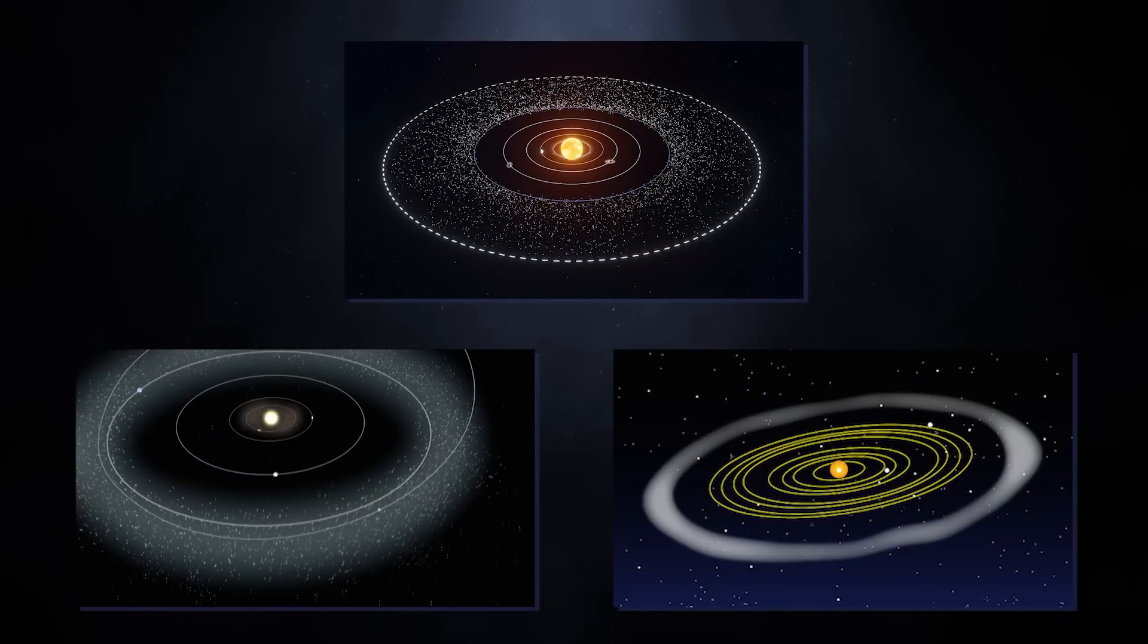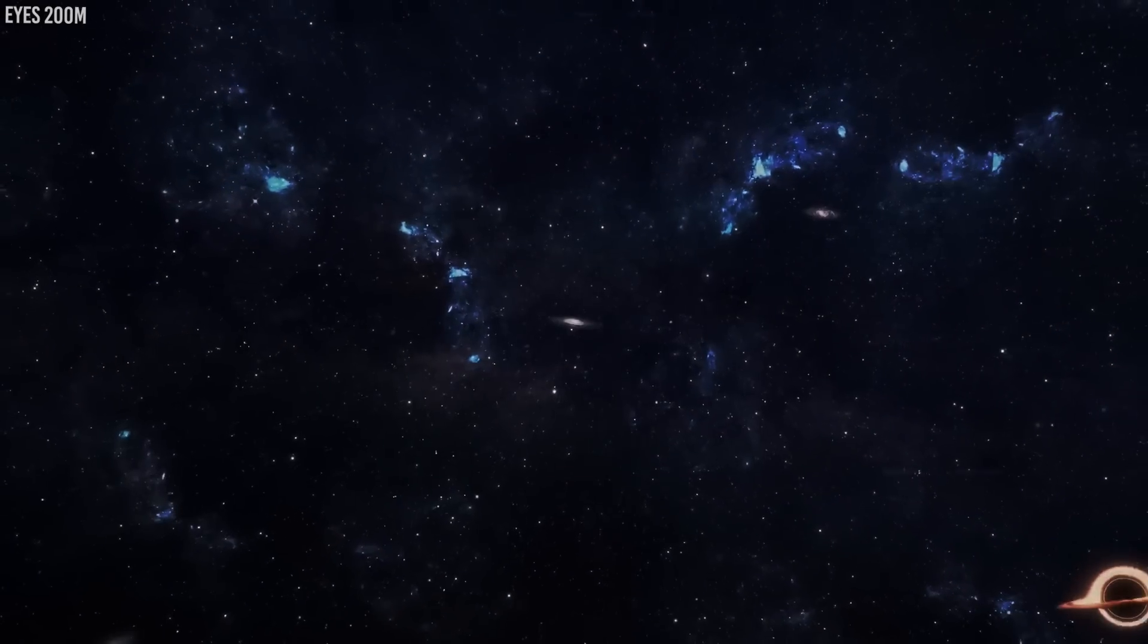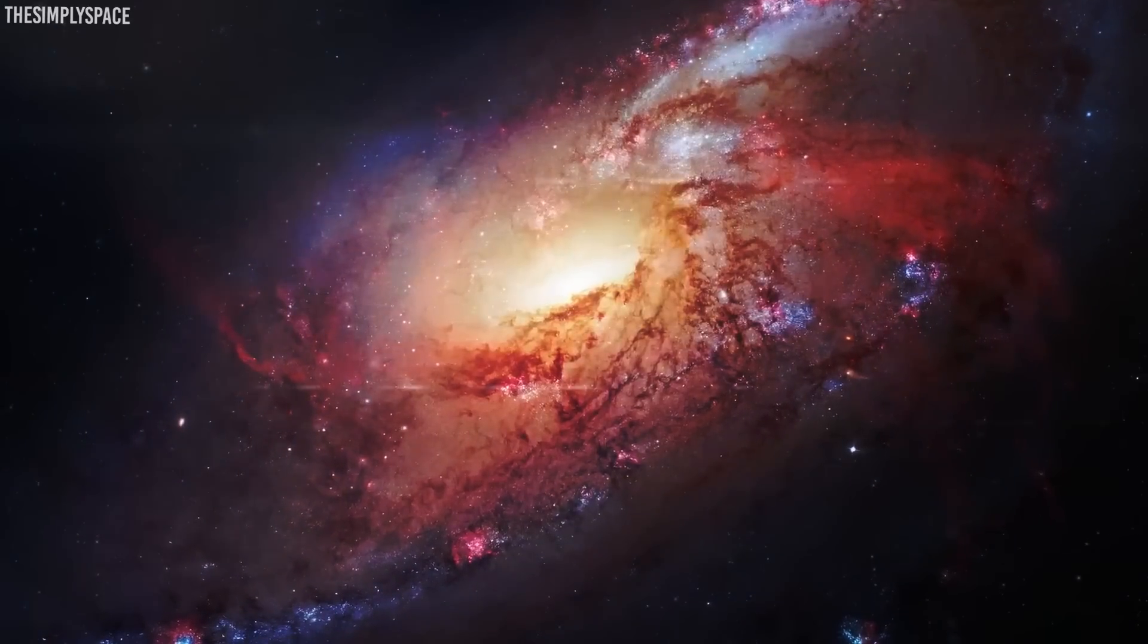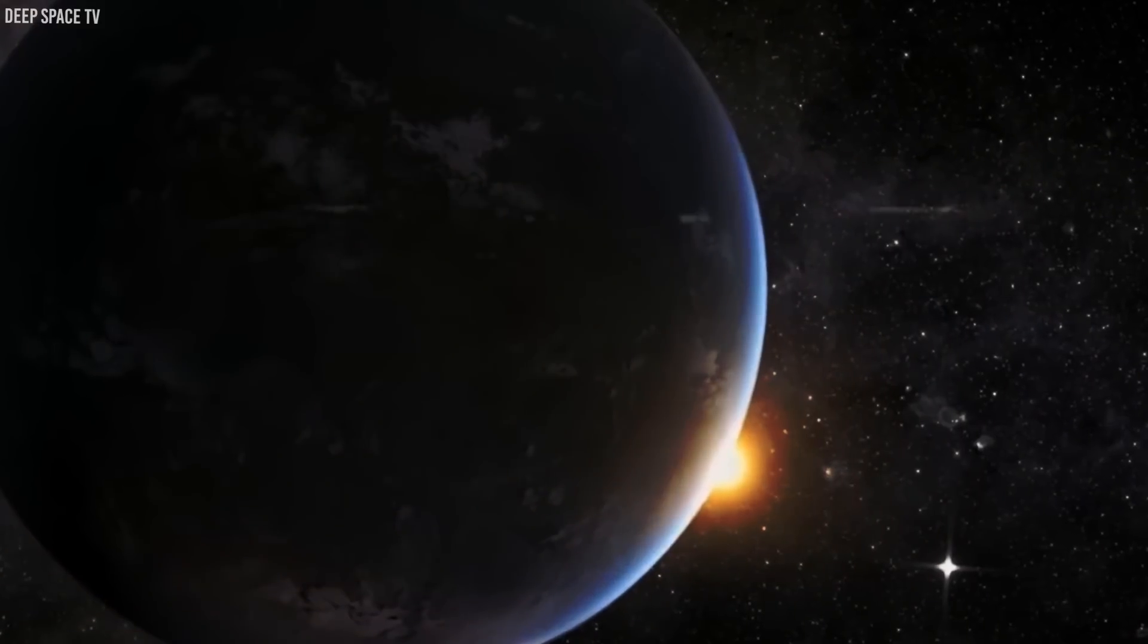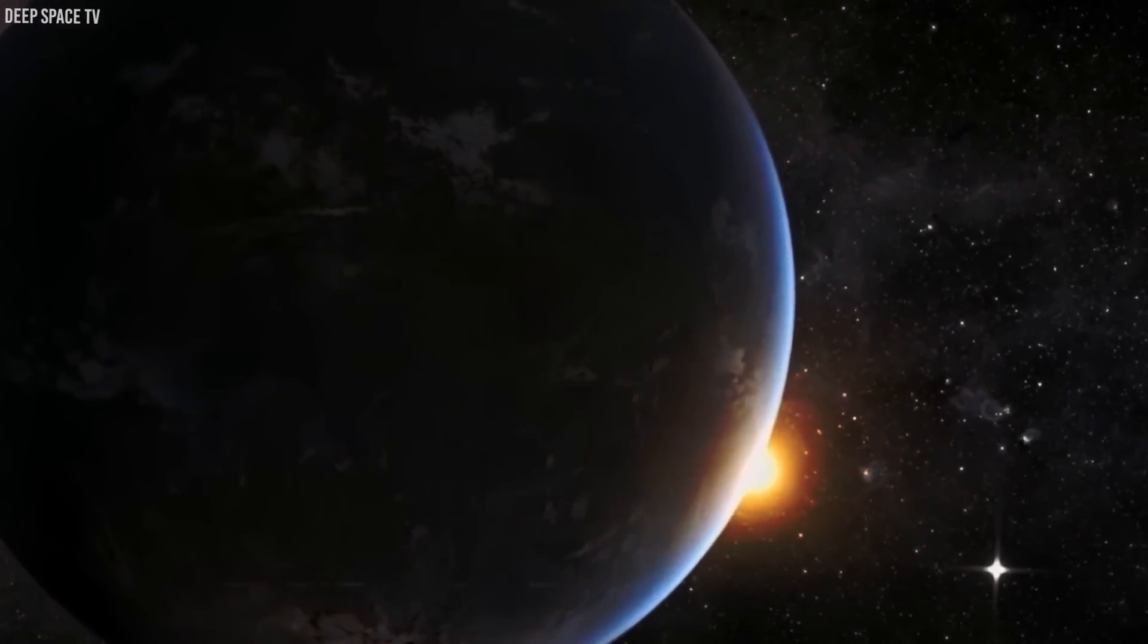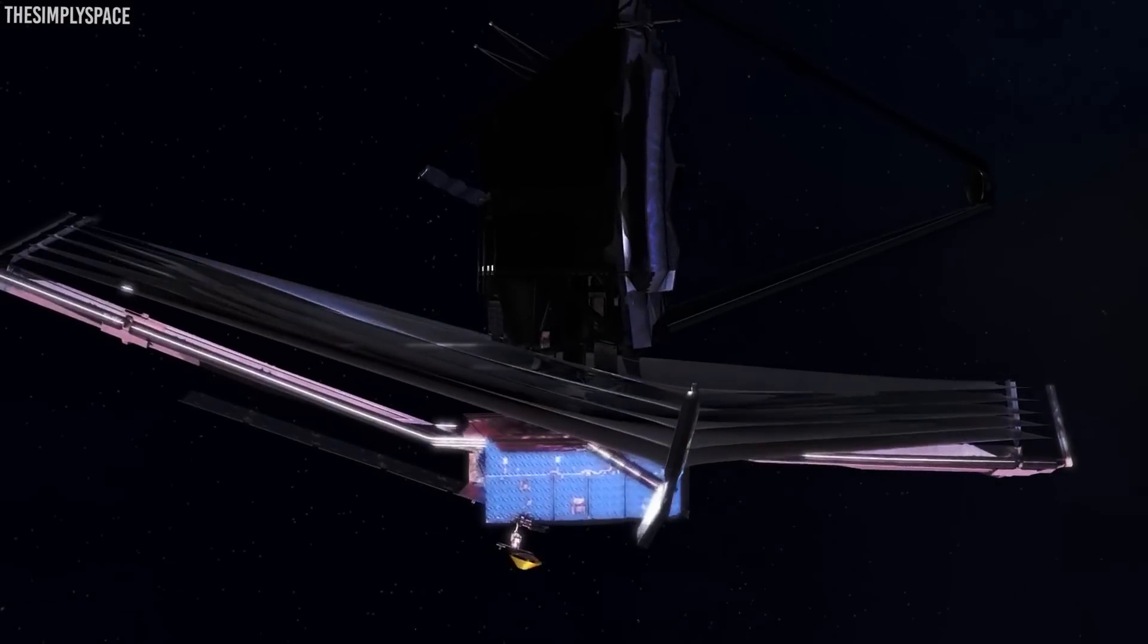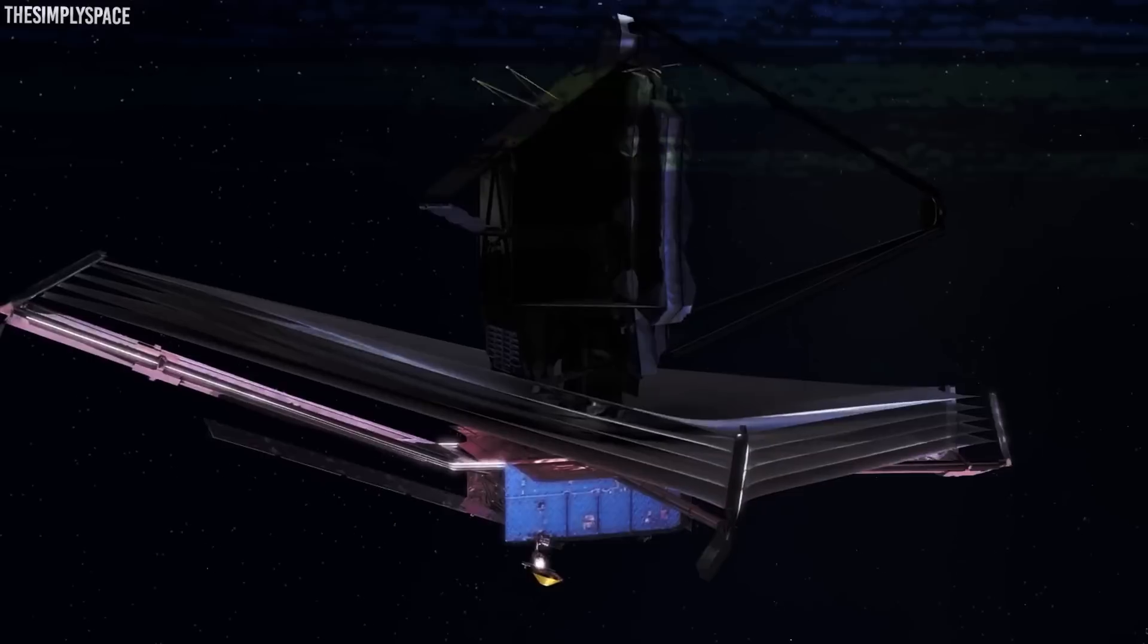The Kuiper Belt is like a grand cosmic mystery novel waiting to be explored. Each object tells a chapter of our solar system's history. By studying them, scientists decipher the secrets of our past, our place in the universe, and the unseen forces that shape our cosmic neighborhood. It's a celestial journey that reminds us that our solar system is a dynamic, ever-evolving place, with tales waiting to be discovered.